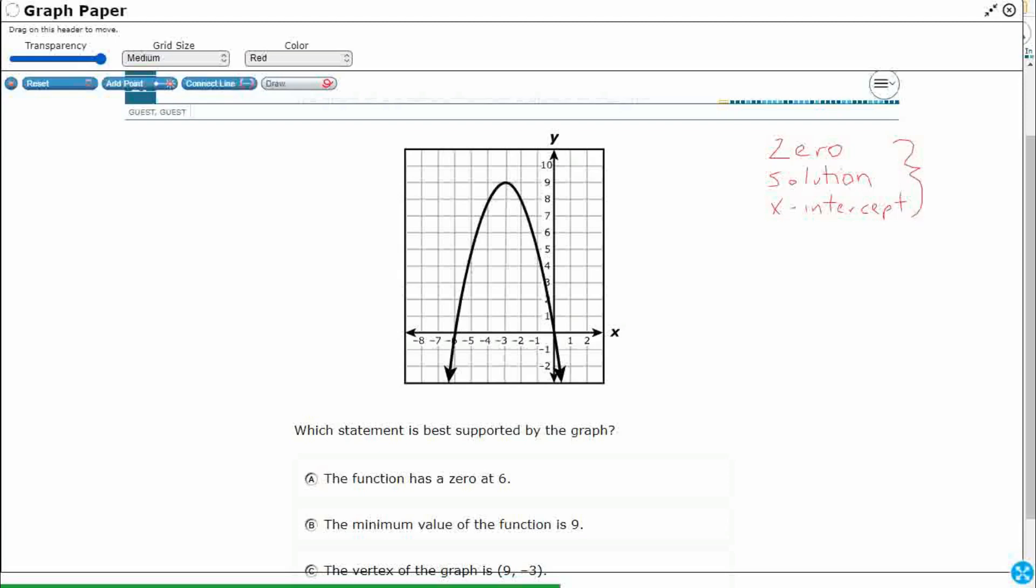The reason we call these a 0 or solution is we have the question, if f of x equals 0, that means the y equals 0. That means it's on that x axis. The question is, what is the x value that makes that happen? And that's that x intercept, or the solution, or the 0. Well, where are my solutions? I see one right there at negative 6. So we can either just use shorthand to just call it negative 6, and then we've got 0 right there.